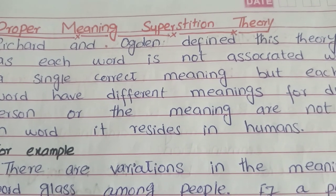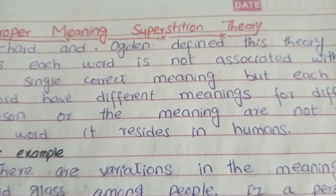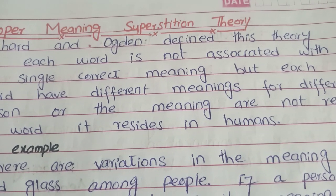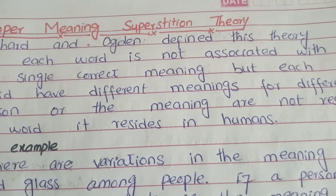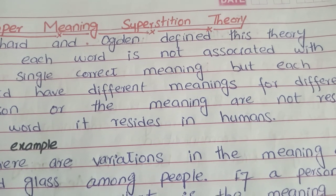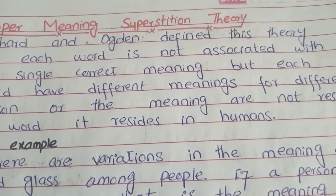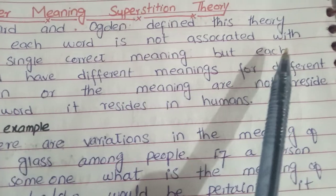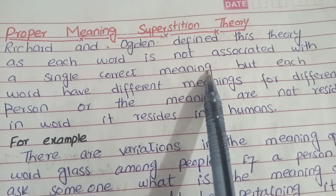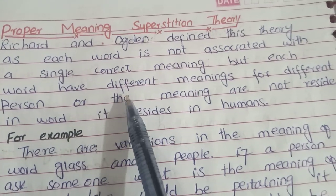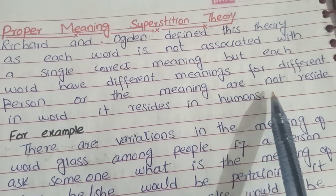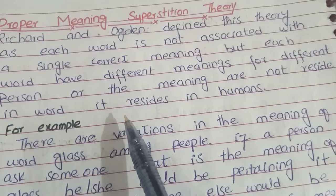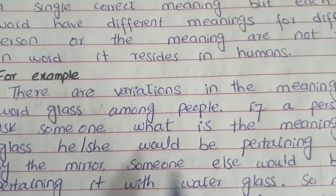Ogden and Richards also gave the Proper Meaning Superstition Theory. This theory says that words do not have inherent meaning; rather, meanings are interpreted by people. Meanings depend upon the background knowledge and past experience of the listener and the speaker. They define this theory as: each word is not associated with a single correct meaning, but each word has a different meaning for different people — meaning does not reside in the word, it resides in humans.